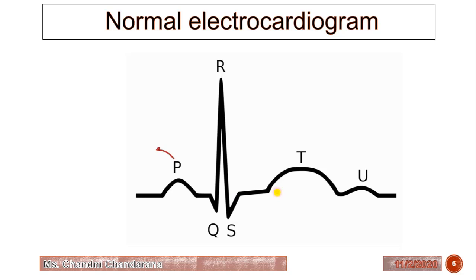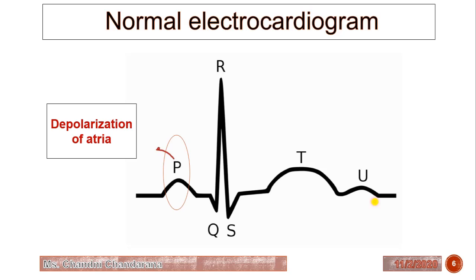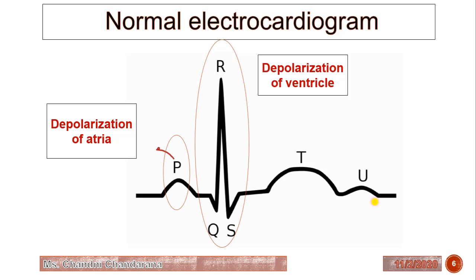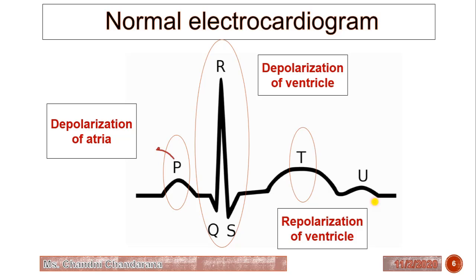Now, to understand the type of arrhythmia we should know the normal electrocardiogram. This is the normal ECG. We will see the P wave, the PQ interval, then the QRS complex, and there will be a T wave. The P wave represents the depolarization of the atria. The QRS complex represents the depolarization of the ventricle. The T wave represents the repolarization of the ventricle. And the PQ interval represents the conduction through the AV node, bundle of His, and Purkinje fibers.